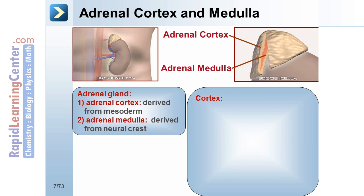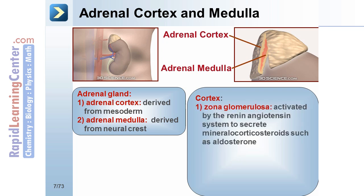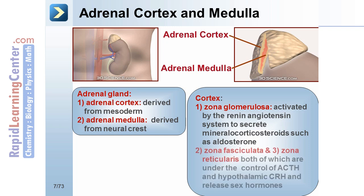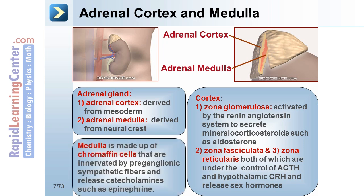The cortex can be further divided into three zones. The zona glomerulosa, which is activated by the renin-angiotensin system to secrete mineralocorticosteroids such as aldosterone. The second area is the zona fasciculata, and the third is the zona reticularis, both under the control of ACTH and hypothalamic CRH, and both releasing sex hormones. The medulla is made up of chromaffin cells that are innervated by preganglionic sympathetic fibers and release catecholamines such as epinephrine.